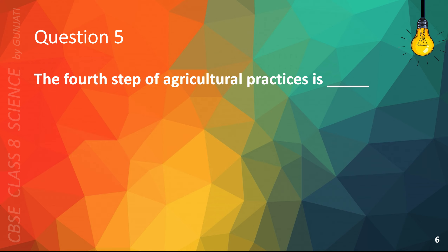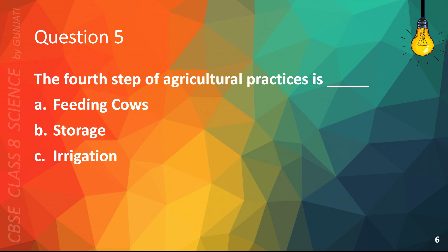Question 5. The fourth step of agricultural practices is: A. Feeding cows, B. Storage, C. Irrigation, or D. Lunch break. The correct answer is C. Irrigation.